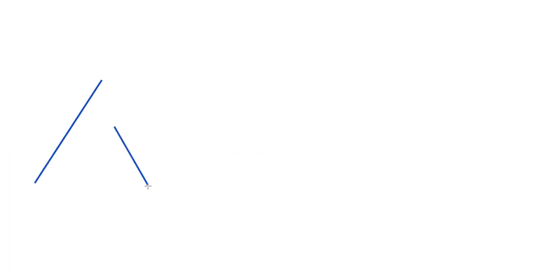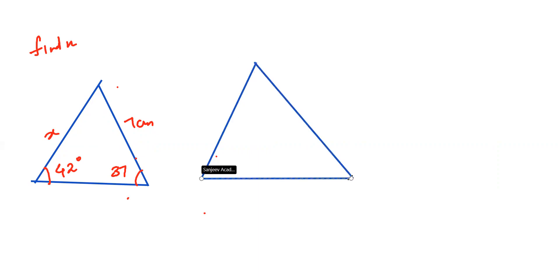This is for finding an unknown side. I will just draw a triangle. I will mark here X. This is seven centimeter. And then I will mark two angles: 42 degrees, 37 degrees. The question is find X. So first thing is the previous triangle which I have drawn. Draw the same thing first. Draw the same triangle. A, B, C. Then what? Here it is angle C. Here it is angle B. Here it is angle A.